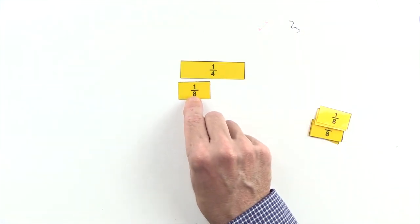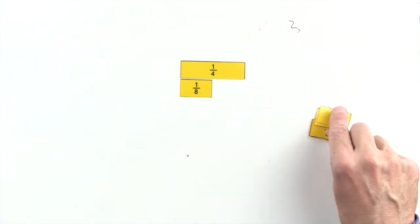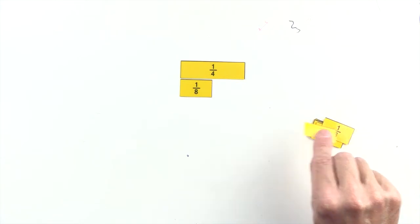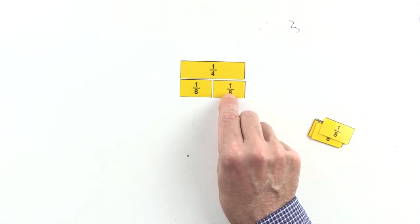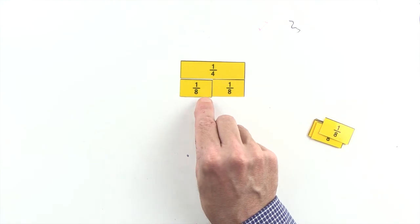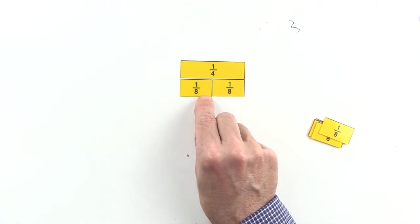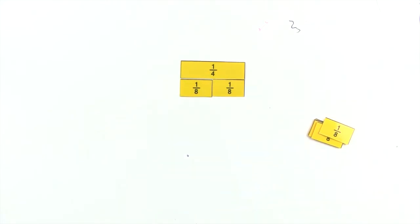One eighth is less than one quarter, but two eighths are equal to one quarter, so two eighths and one quarter are equivalent fractions.